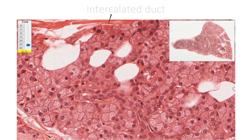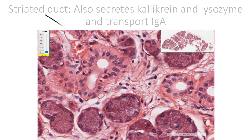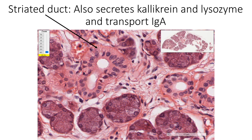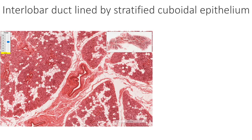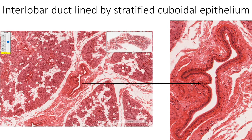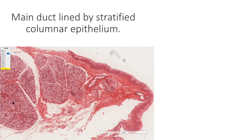You can see an intercalated duct here lined by cuboidal epithelium. Here you can see a striated duct lined by low columnar cells showing basal striations and centrally displaced nucleus. In addition to modifying the electrolyte content of the acinar secretion, the cells lining these ducts also help in secreting kallikrein and lysozyme and aid in transportation of immunoglobulin A. Here you are seeing an interlobular duct lined by pseudostratified columnar epithelium. In this section, you can see an interlobar duct lined by stratified cuboidal epithelium. Here you are seeing a main duct lined by stratified columnar epithelium.